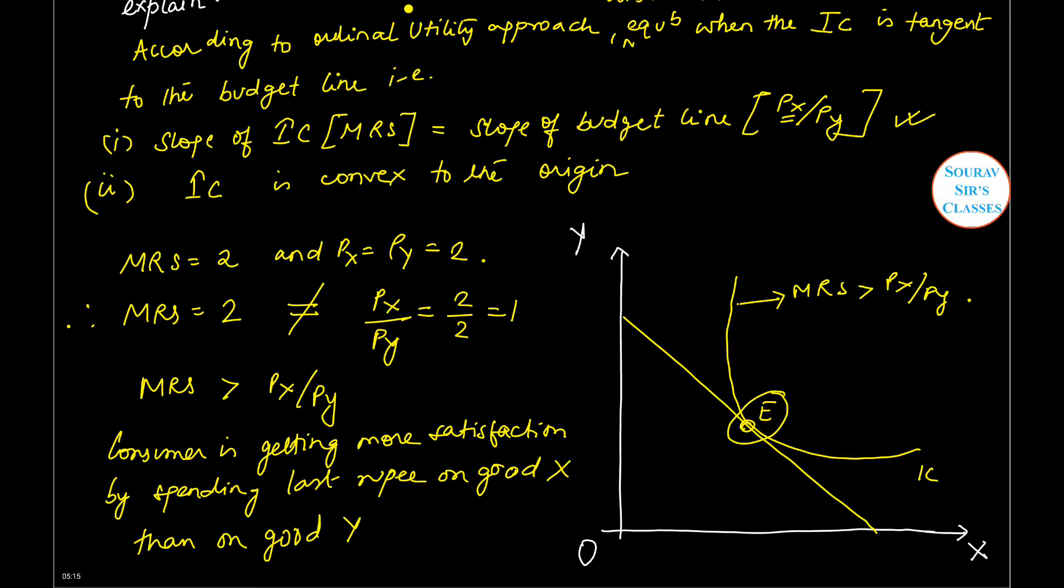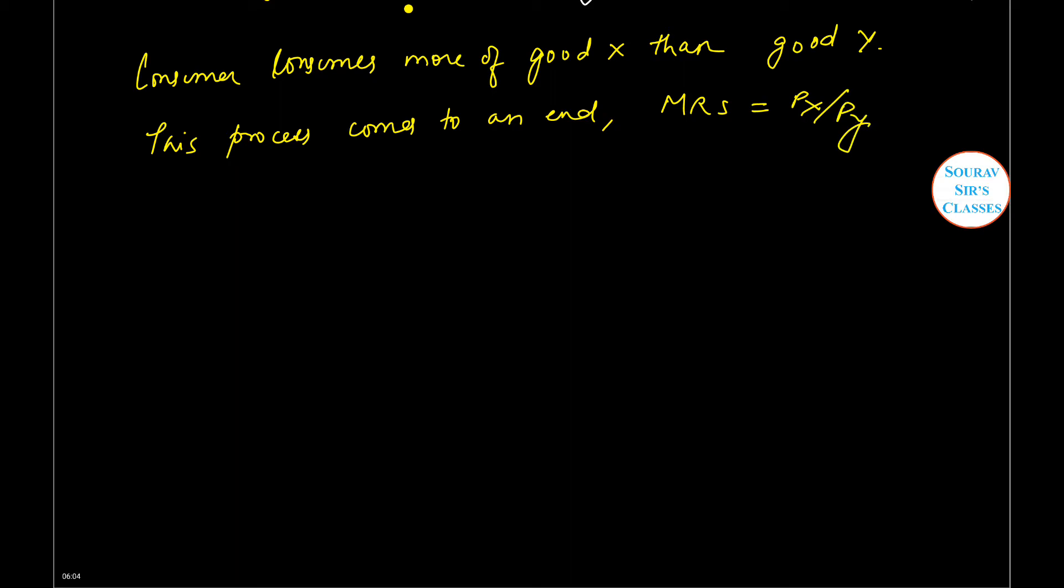As a result, the consumer will consume more of good X than good Y. This process will continue until MRS equals Px/Py.